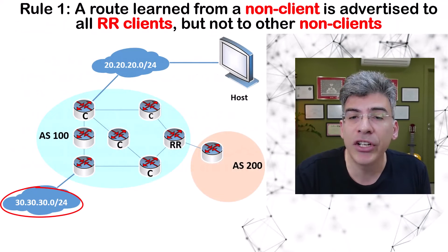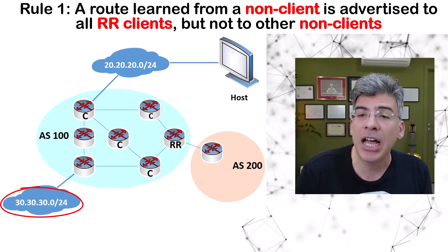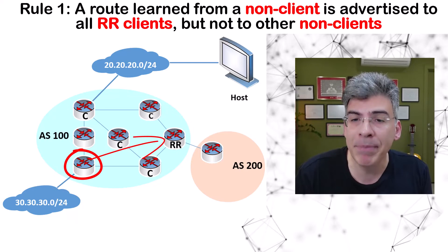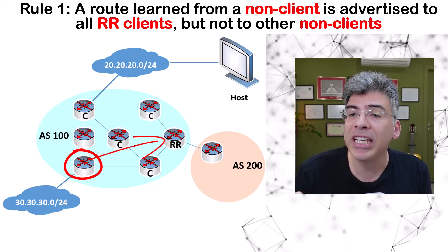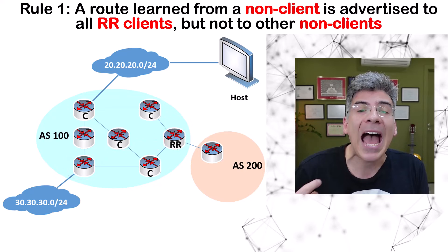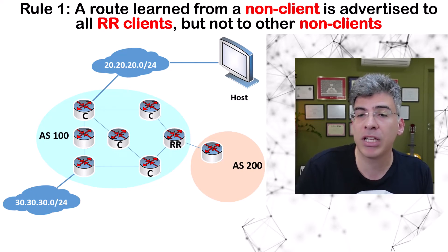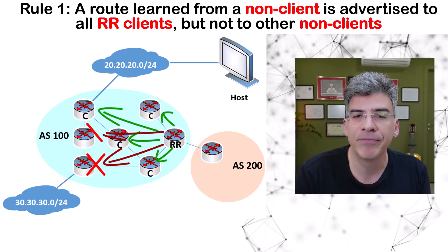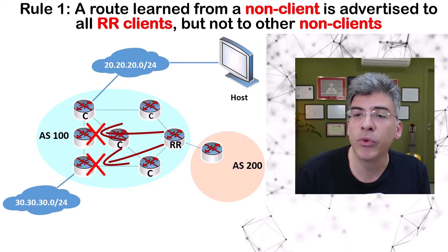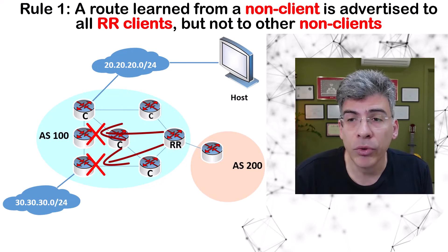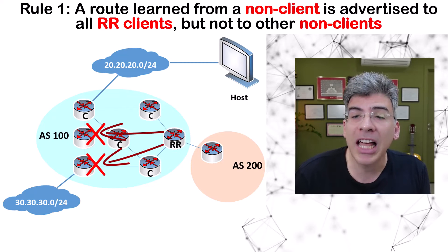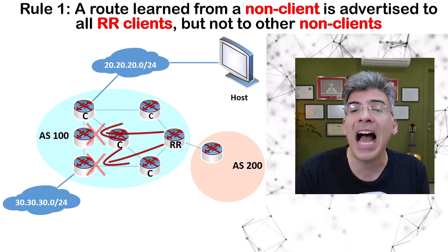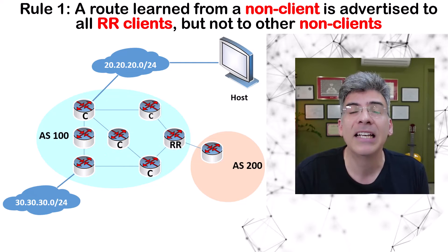Let's say the 30.30.30.0/24 network is advertised from a non-client router to the route reflector. Remember, this non-client router has IBGP peerings with all other routers in the AS. The route reflector receives this route and will advertise or reflect the 30.30.30.0/24 route to its RR clients, but not to the other non-client. If it did that, it would violate the split horizon rule. Client routers and route reflectors are exempt from the split horizon rule, but non-clients are not, so this rule is still enforced when it comes to non-clients. I have a video about the IBGP split horizon rule if you want to learn more — link in the description below.